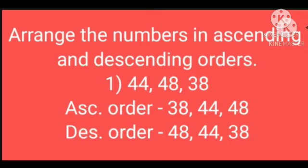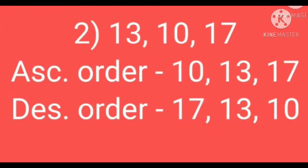Now we will solve some examples to help you understand easily. Arrange the numbers in ascending and descending orders. The ascending order will be 38, 44, and 48. And descending order will be 48, 44, and 38. Next: 13, 10, and 17. Ascending order will be 10, 13, 17. And descending order will be 17, 13, and 10.